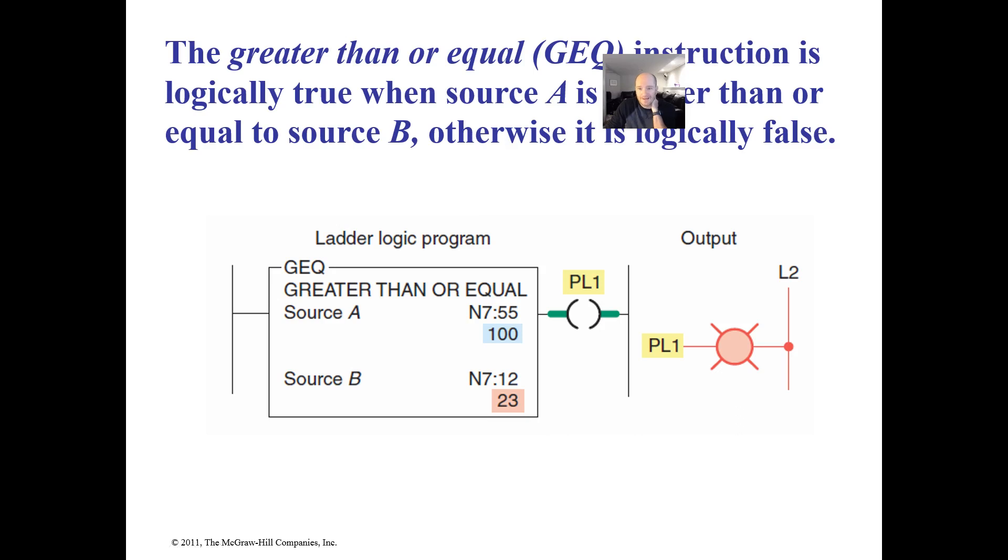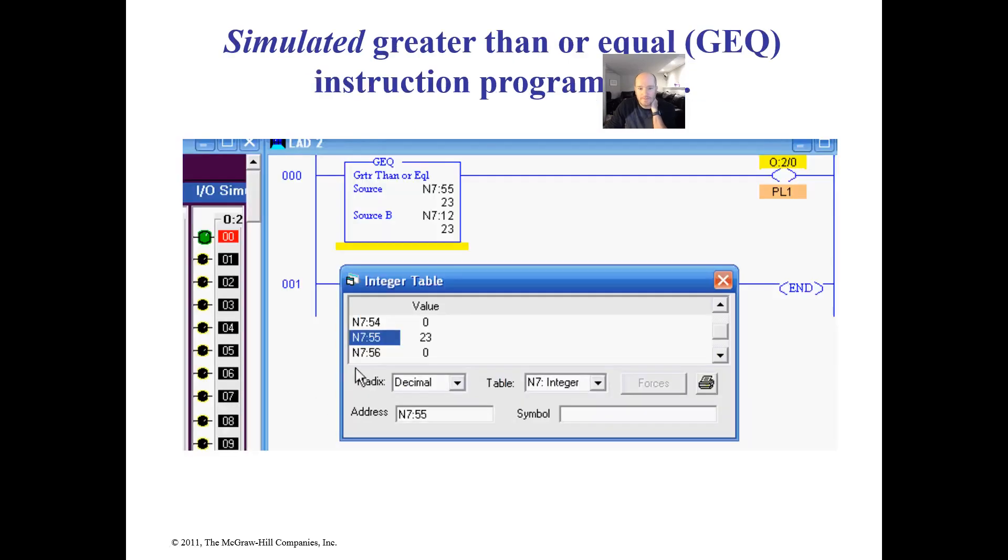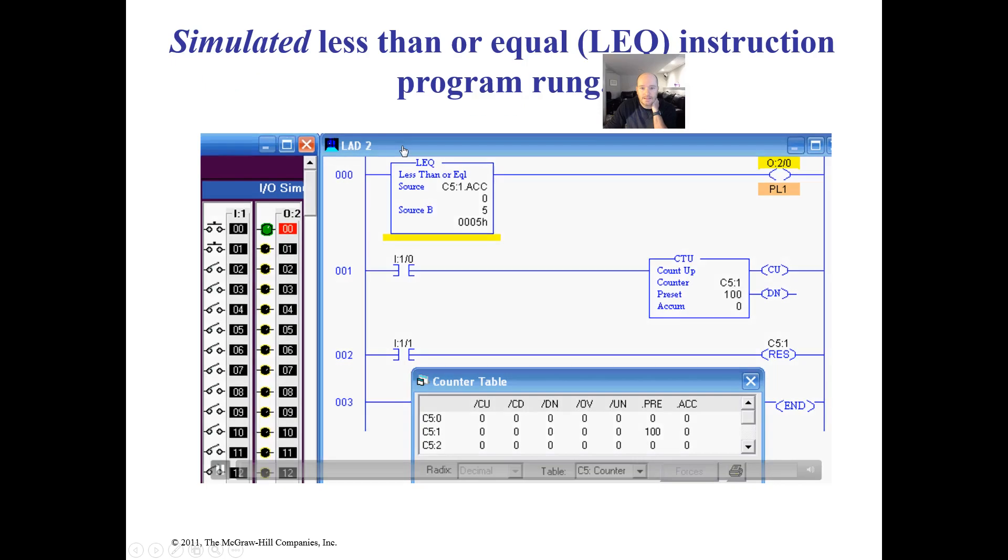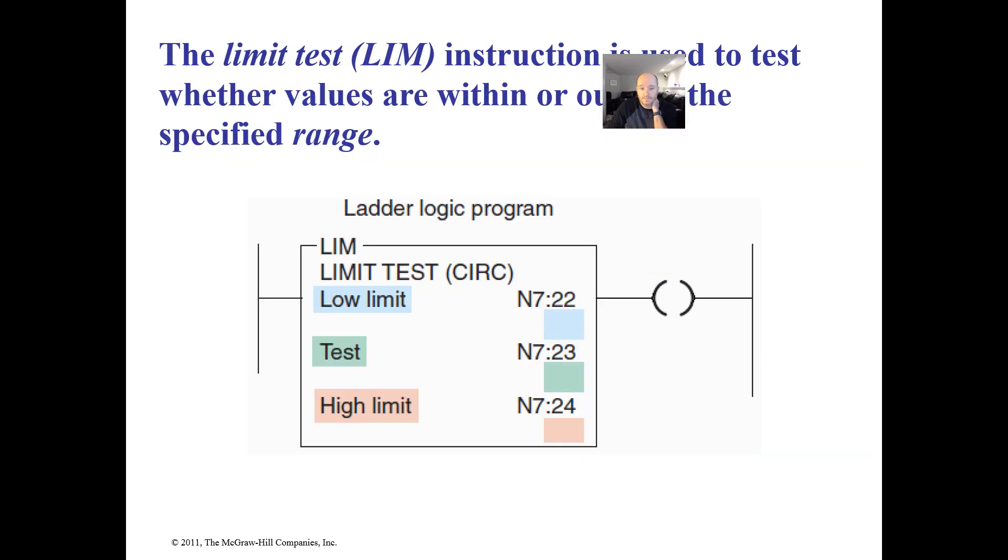Again, the greater than or equal to, I'm not going to spend too much time. You guys know how I think. This is on because it's equal to. If they make it 85, it'll still be on because it's greater than or equal to. If they make it less than that, it turns off. The less than equal to, I think you guys get the idea. At five it's still good, at six it turns off.